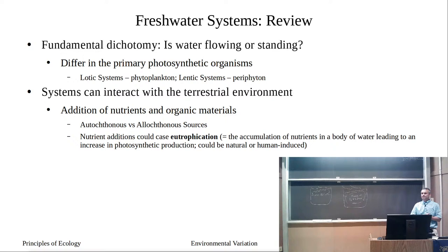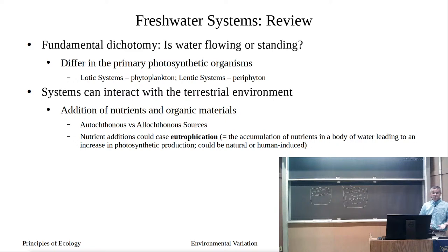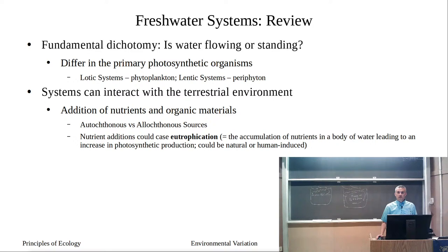Streams and rivers rely heavily on allochthonous sources, especially at headwaters, and materials filter down the river continuum. The amount of allochthonous sources entering a lake depends on watershed area — the larger the watershed, the more nutrients and organic material can enter. In some cases, heavy nutrient addition leads to eutrophication: the accumulation of nutrients in a body of water leading to increased photosynthetic production. You can transition a lake from oligotrophic to eutrophic with a steady nutrient supply. The most famous case is Lake Erie — a huge nutrient influx that changed it to a nearly hypertrophic lake. Stopping nutrient additions can return it to its natural state.